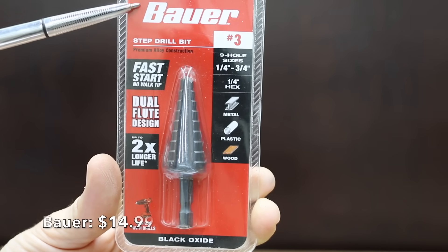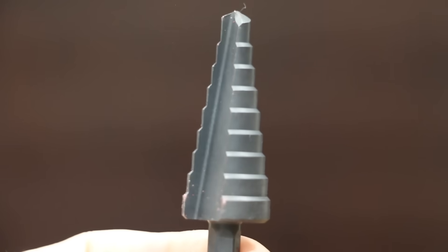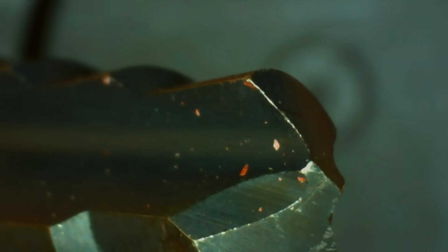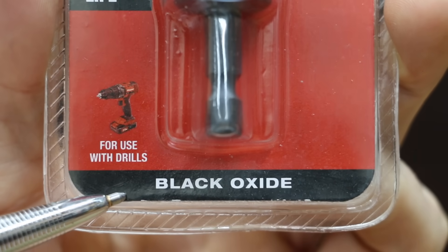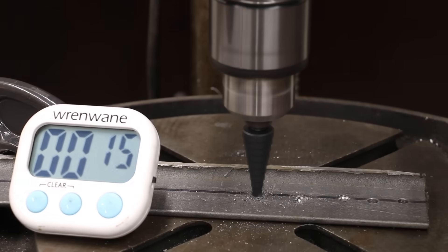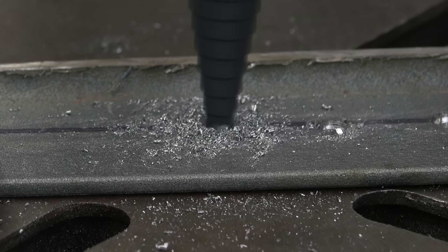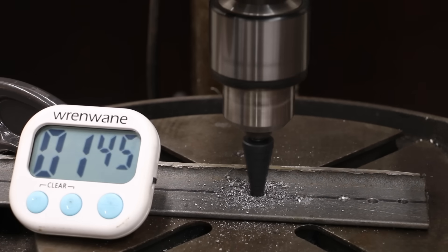At $14.99, the Bauer is very reasonably priced if it can live up to its claim that it lasts two times longer. Heavy Duty Guaranteed, Fast Start No Walk Tip, Black Oxide. Made in China. The Harbor Freight Bauer brand claims to have a Fast Start Tip. Unfortunately, it failed to impress, taking more than twice as long as the Harbor Freight Drill Master, which costs less than half as much.